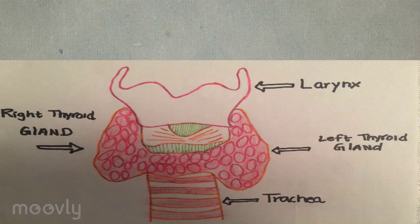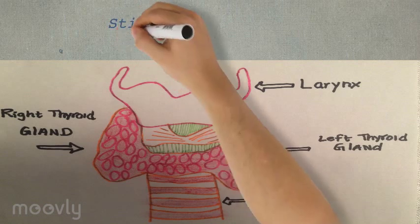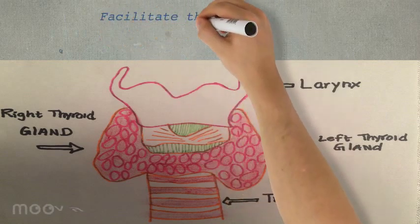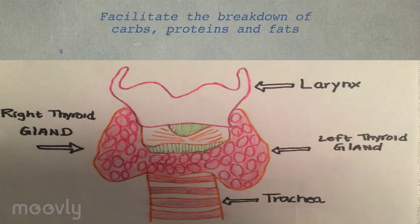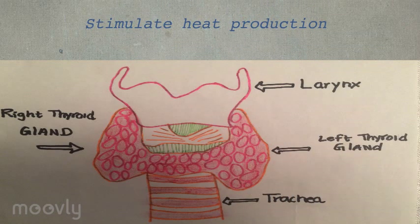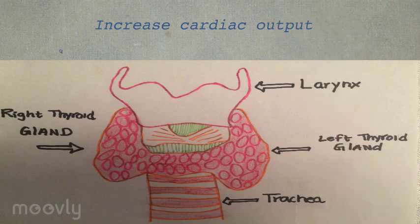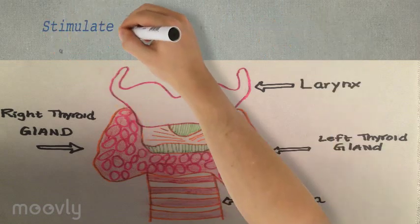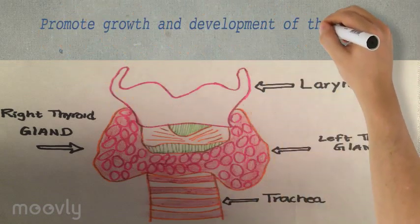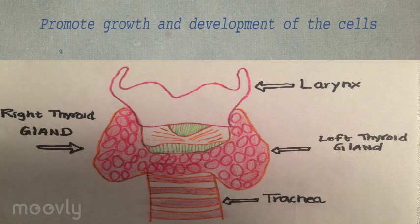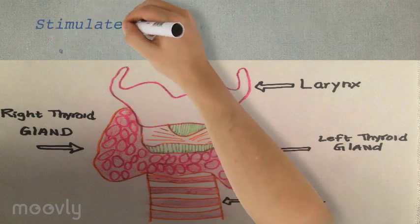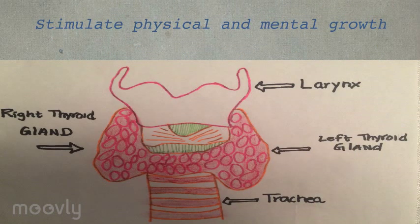The thyroid gland produces hormones that stimulate metabolism, facilitate the breakdown of carbs, proteins, and fats, stimulate heat production, increase cardiac output, stimulate glucose production and absorption, promote growth and development of the cells, increase oxygen consumption, and stimulate physical and mental growth.